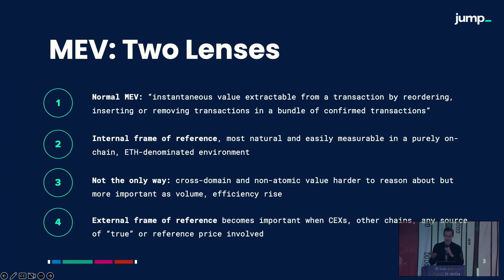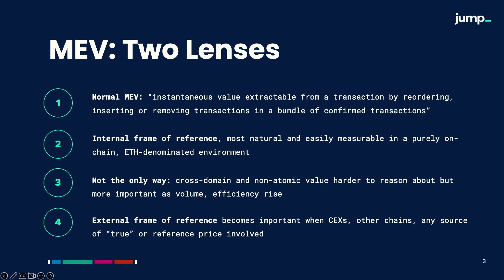Specifically, Jump is a trading firm, so as a traditional finance firm, our reference point typically has some aspect of the outside world, of reference prices. And when you think about cross-domain, non-atomic value, we've had a lot of conversations where somebody says cross-domain MEV is large, it's important. And how important? It's very difficult to measure. I think that part of this discrepancy is because it hasn't been very well defined thus far. All of the things that people tend to focus on in MEV tend to be within the internal frame of reference. The external frame of reference would be something we'd want to consider when centralized exchanges or other chains or any other source of true or reference price is involved.